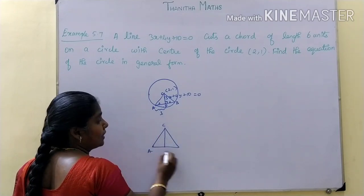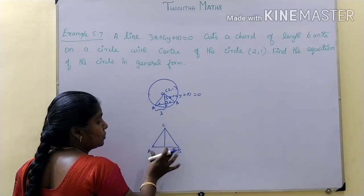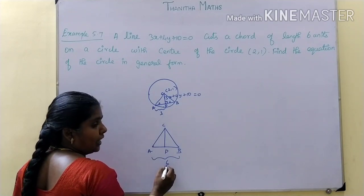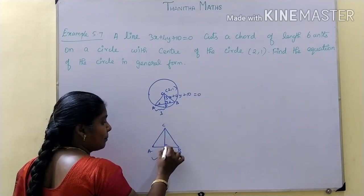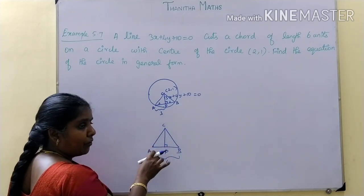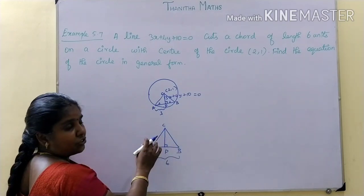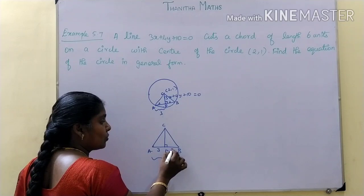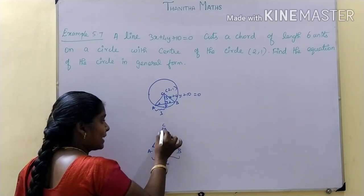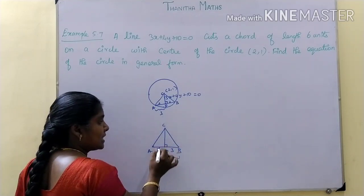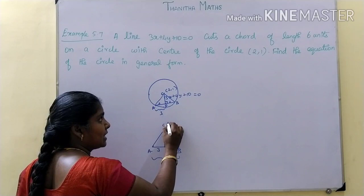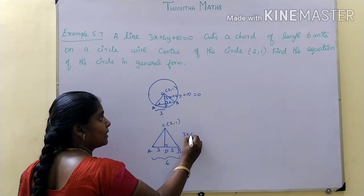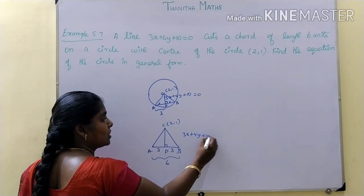Triangle CAB: points C, A, B, P. AB total length is 6 units. Since it is an isosceles triangle, the median from C to AB gives AP equal to 3 units. The center point is 2,1 and the line equation is 3x plus 4y plus 10 equal to 0.